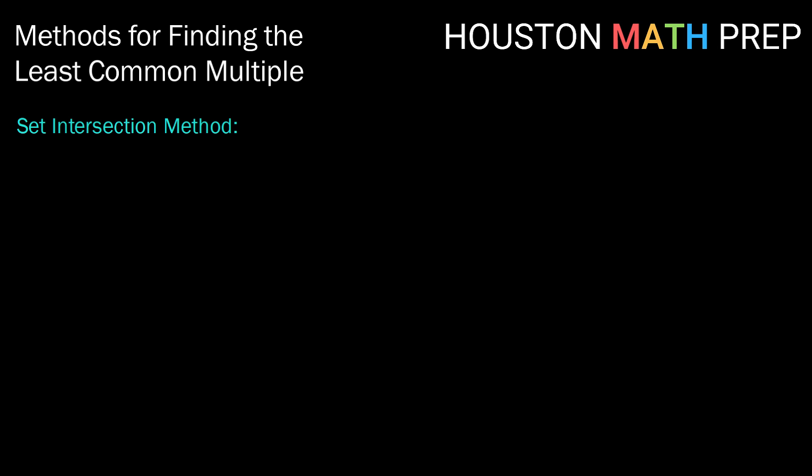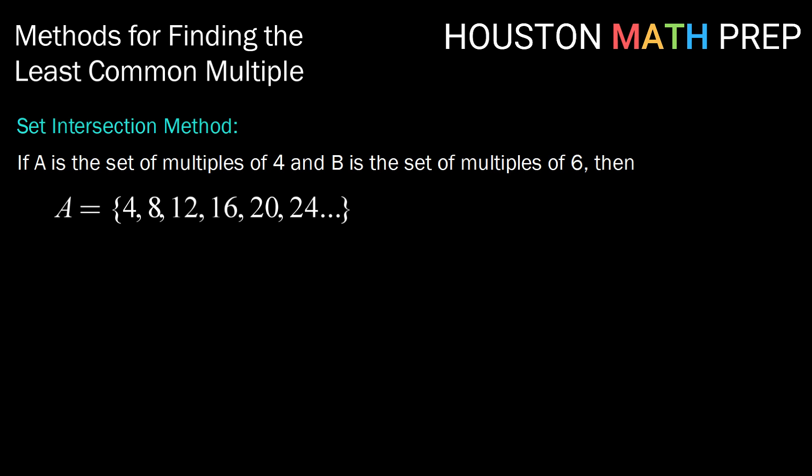Another method is called the set intersection method. So if we let A be the set of multiples of 4 and B be the set of multiples of 6, then A would at least start out as 4, 8, 12, 16, and so on and so forth, right? It's technically an infinite set, but we can just list the first several.